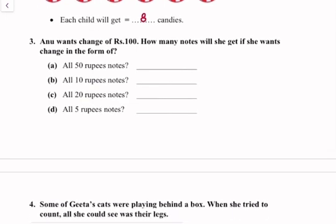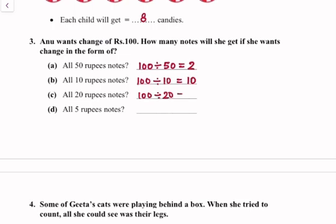Question number 3: Anu wants change of rupees 100. How many notes will she get if she wants change in the form of all 50 rupee notes? We divide 100 by 50 — 2 notes. For all 10 rupee notes, 100 divided by 10 gives 10 notes. For all 20 rupee notes, 100 divided by 25 notes. For all 5 rupee notes, 100 divided by 5 gives 20 notes.